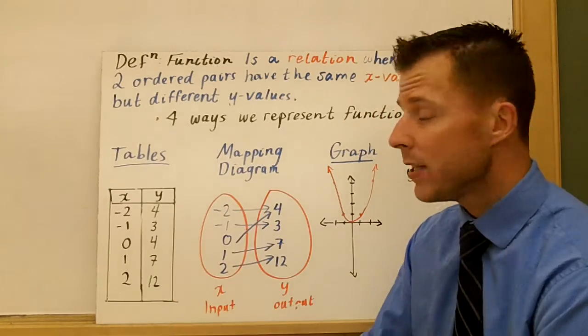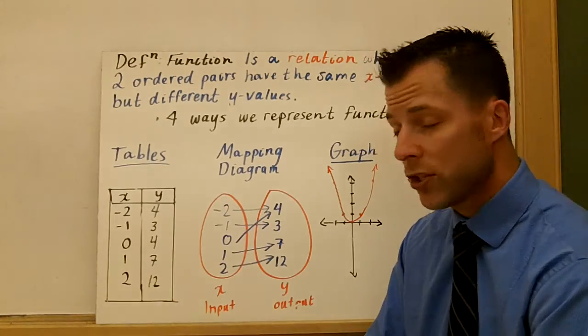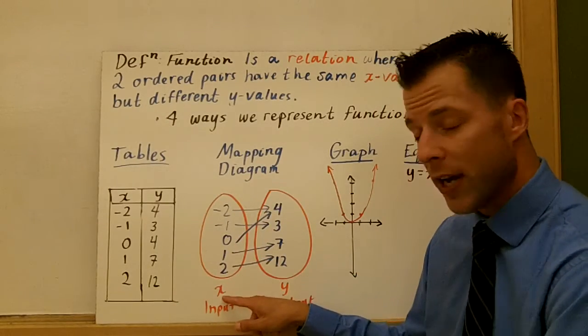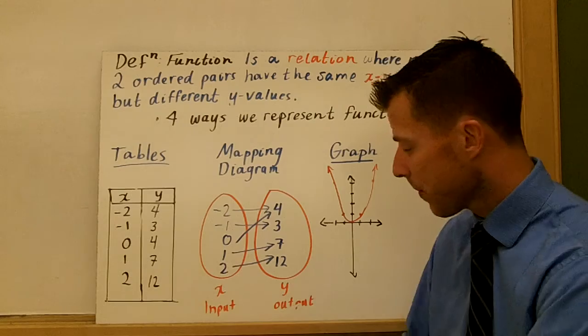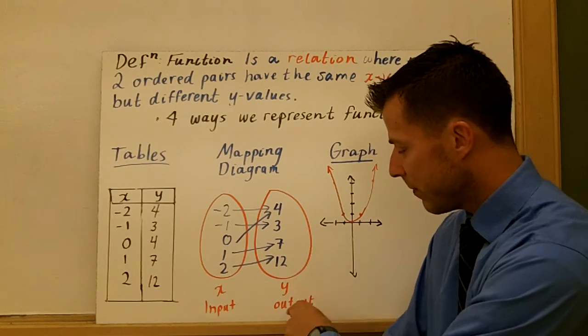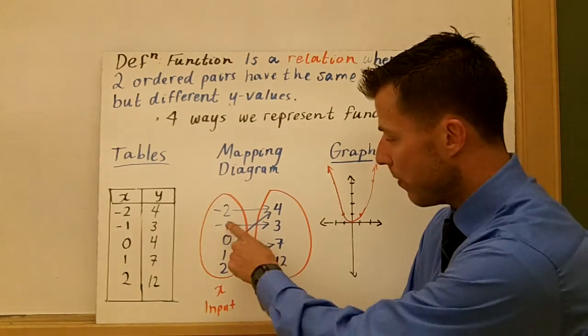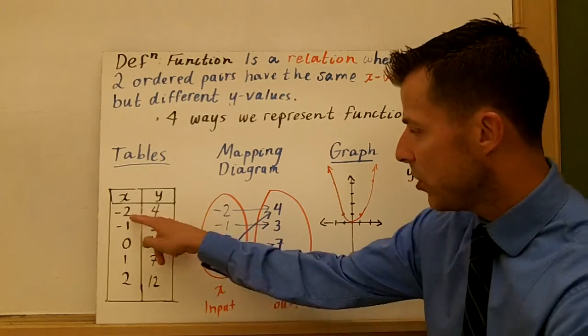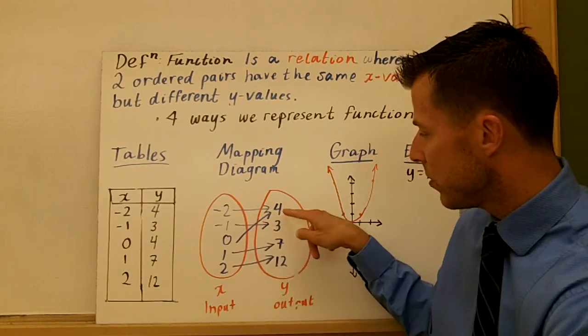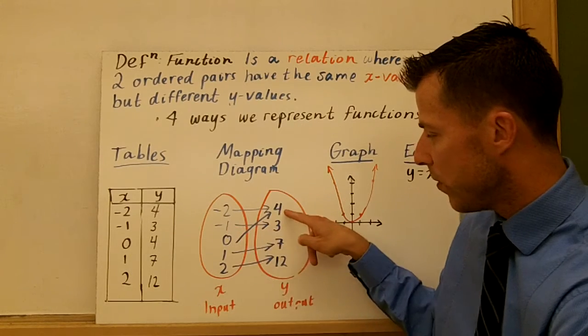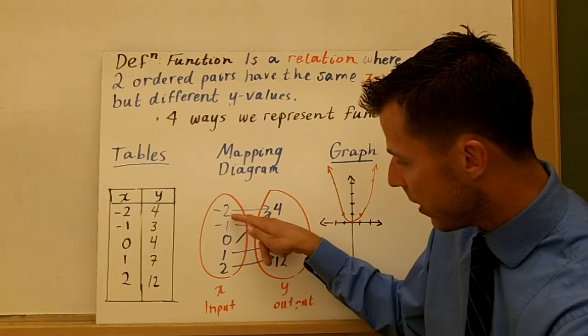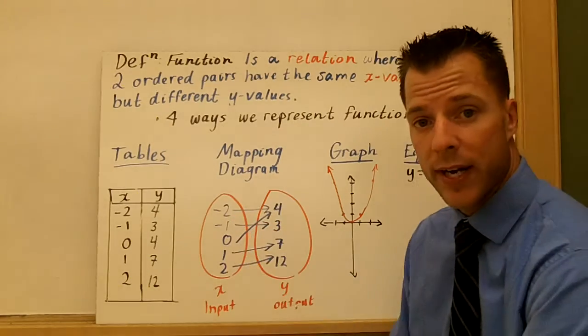So the idea here is different x values, you're really going to see a function real quickly. Mapping diagram is a real common way to look at functions or relations. It's an easy way for me. The first bubble here is your x values or your inputs. Your y values are the second bubble and those are your outputs. So domain values, range values here. And again, negative two maps to four, negative one to three, zero to four, one to seven, two to twelve.